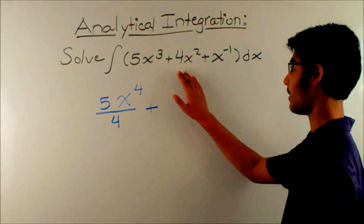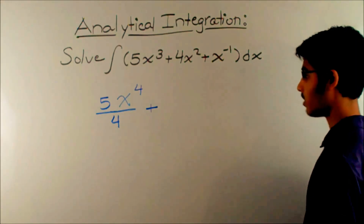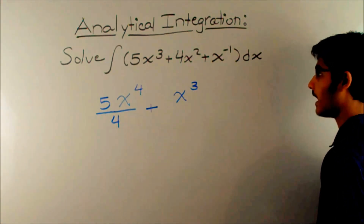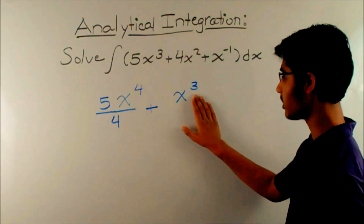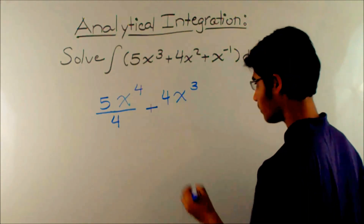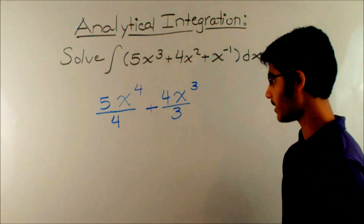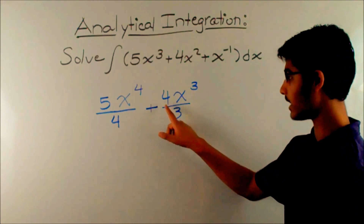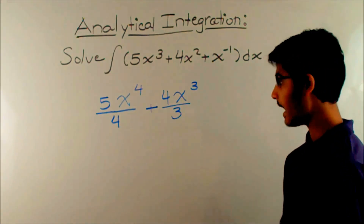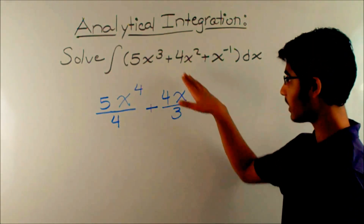Plus, now we have 4x squared. The original term had to have x cubed in it. The coefficient is 4, and since 4 is not divisible by 3, we have to divide by 3. So the coefficient of the original term had to be 4 thirds, so that when it was multiplied by 3 we get 4.